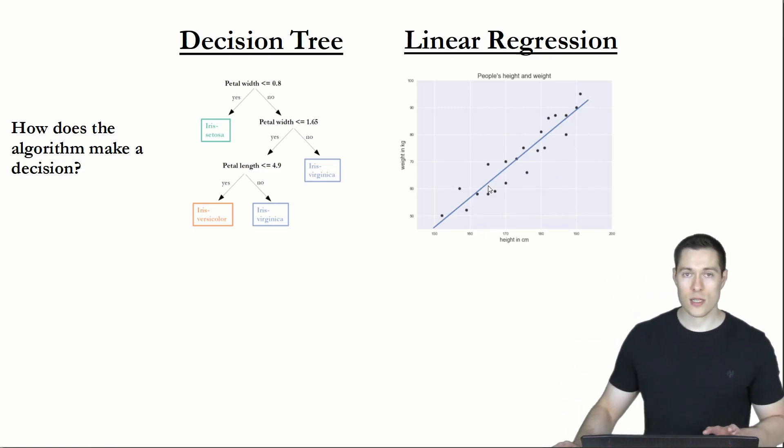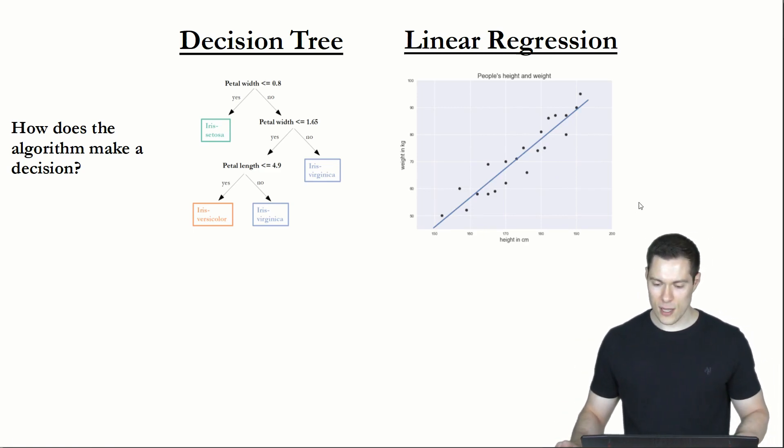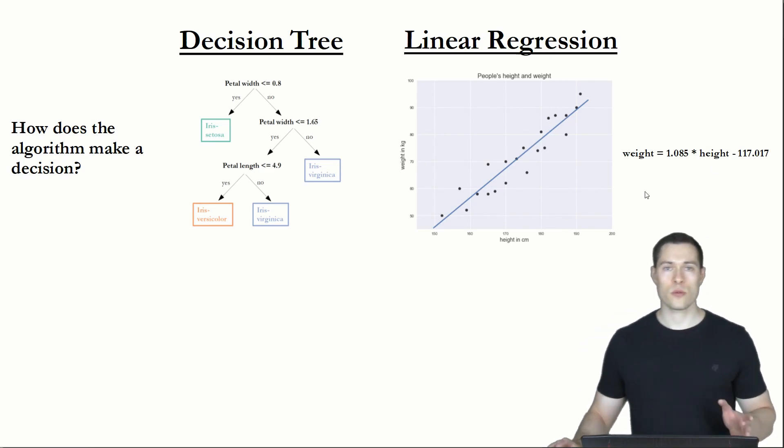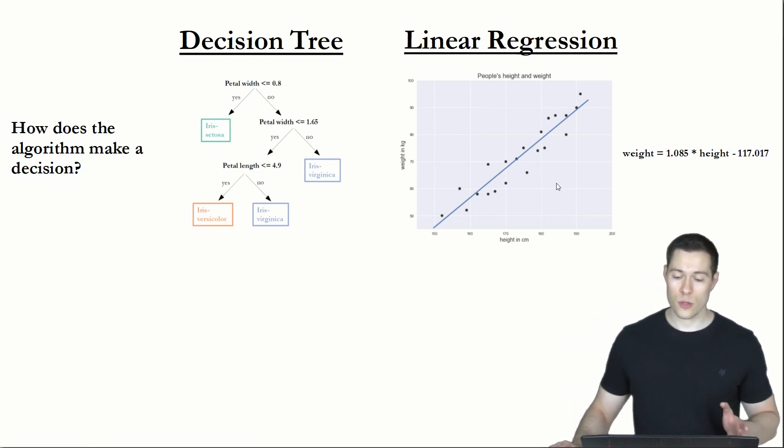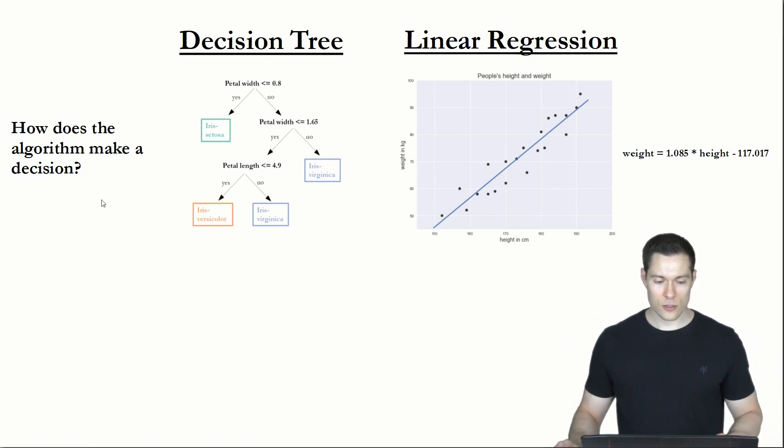And the particular equation of this line looks like this. So the weight equals 1.085 times the height minus 117.017. And if you want to now predict the weight of a person, you simply measure their height and then you put in that height into this equation. And that way you get an approximate prediction of what that person is probably weighing. So that's the first aspect that you need to consider.